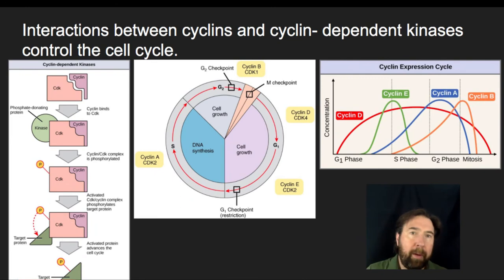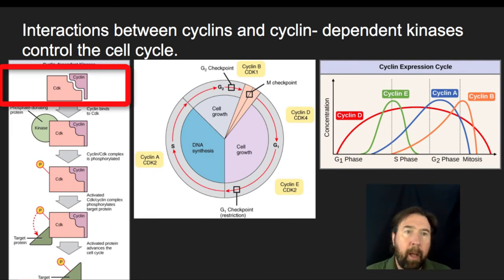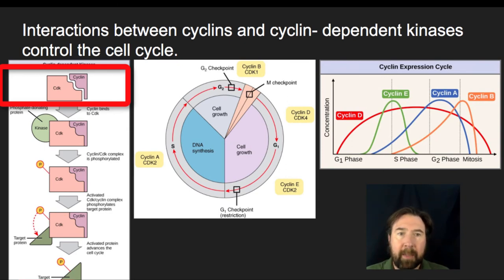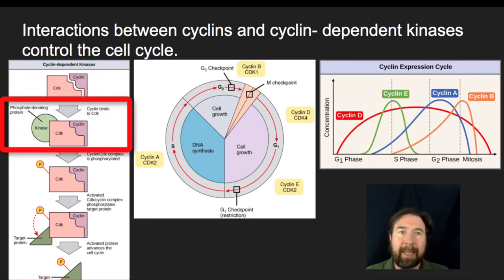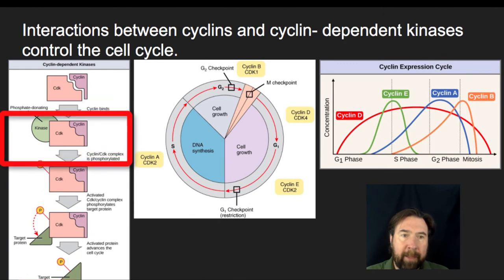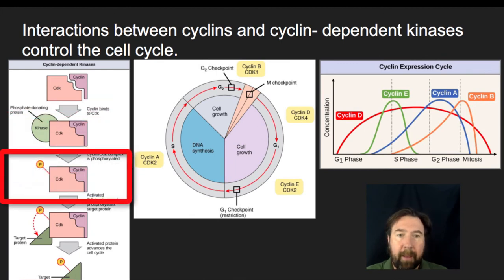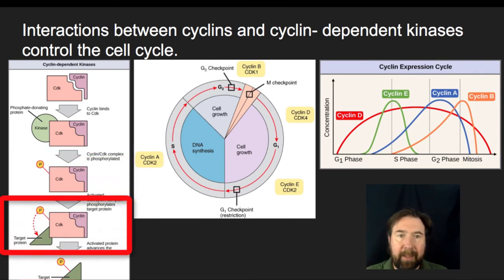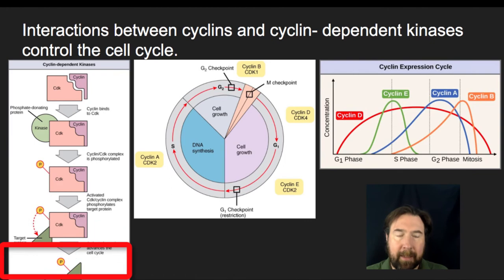How do cyclins and CDKs control the cell cycle? As a general rule, as the cell cycle progresses, cyclins bind to CDKs, forming a cyclin-CDK complex. That complex will then get phosphorylated, which means it will be activated. This activated CDK-cyclin complex will then phosphorylate some sort of target protein that says: advance in the cell cycle.